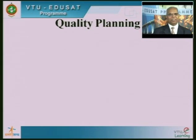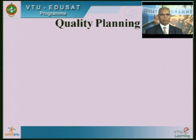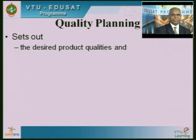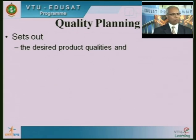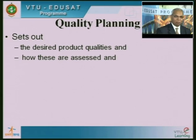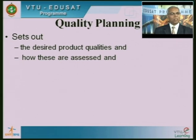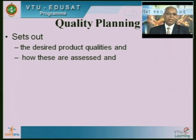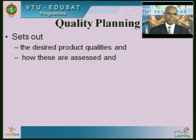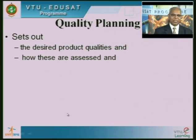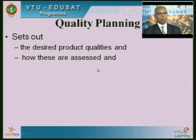Quality planning is the next important activity for defining software quality. It sets out the desired product qualities — we define which qualities are required to say that the software meets quality standards. We also describe how to assess this product quality. For example, 'I want a good response time' is not a proper quality definition. We should say, 'given such a load on my system, my response time should not exceed 3 seconds.' We have to explicitly quantify it so it can later be assessed.